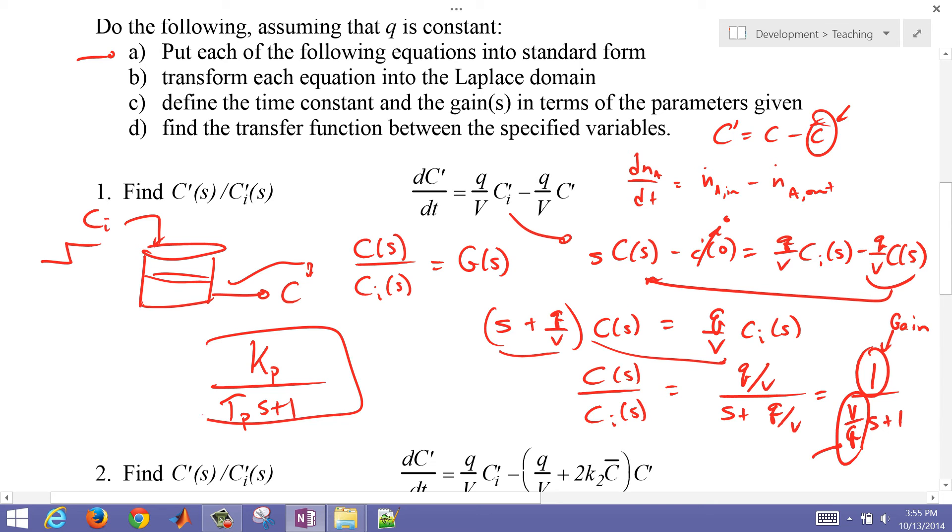So I put this into, for example, a Kp over tau_P S plus 1, after transforming it into the Laplace domain and to find the time constant, so tau_P was equal to V over Q. And then find the transfer function between the specified variables. And that's what we did right there.